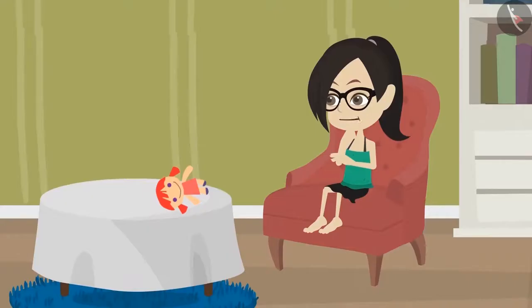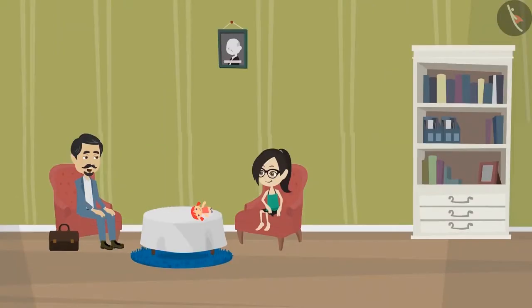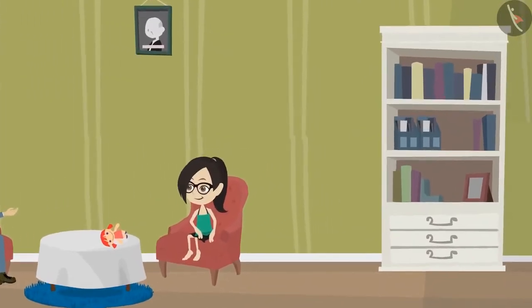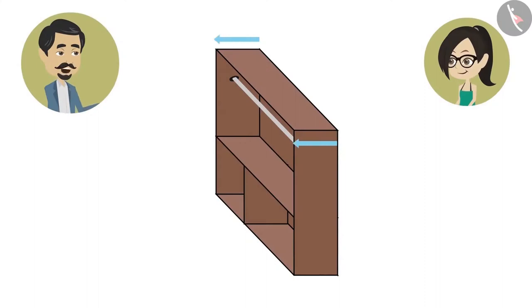What are the objects in our house whose depth can be measured? There are many objects in our house whose depth can be measured. Look at that cupboard. The depth of a cupboard is a very useful measurement, because the more the depth of a cupboard, the more space there will be for storage.